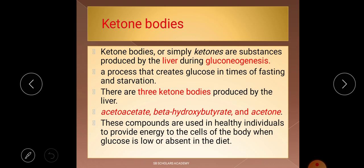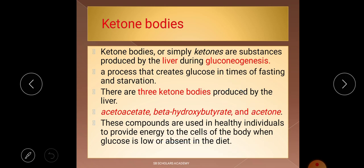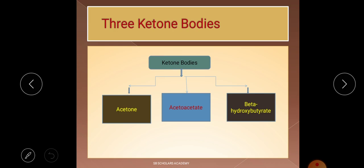These compounds are used by healthy individuals to provide energy to the cells of the body. When glucose is reduced or absent in the diet, ketone bodies are produced to provide energy to the cells. Without energy, the body becomes lethargic. So when glucose is low or absent, these compounds are used to keep our cells active.